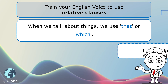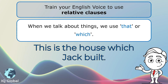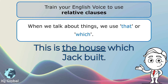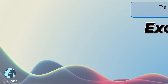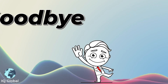Let's have a look at one more example: This is the house which Jack built. This is the relative clause in this sentence because it is telling me more about the house — it is the house that Jack built. House is the noun. Excellent job with relative clauses. Well done. Goodbye.